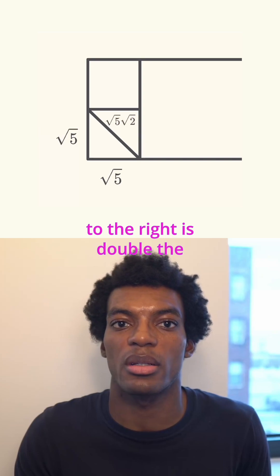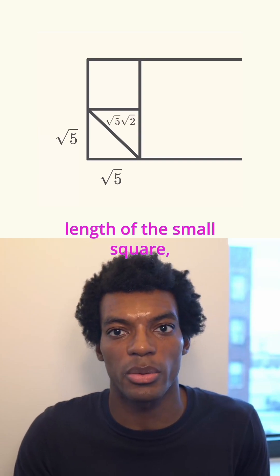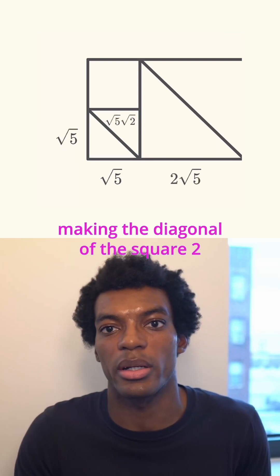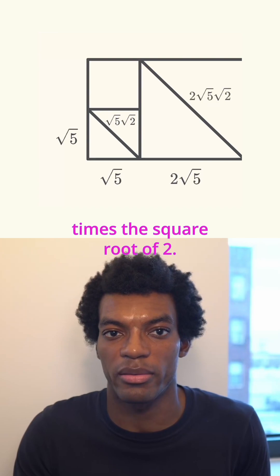The side length of the adjacent square to the right is double the length of the small square, so it's 2 times the square root of 5, making the diagonal of the square 2 times the square root of 5 times the square root of 2.